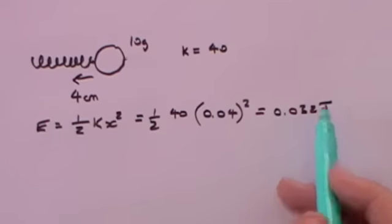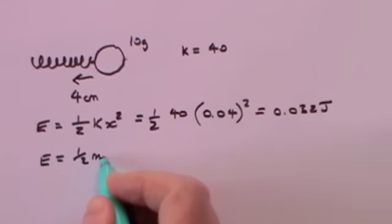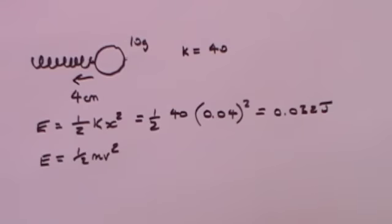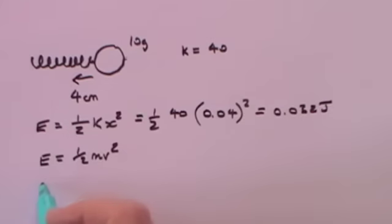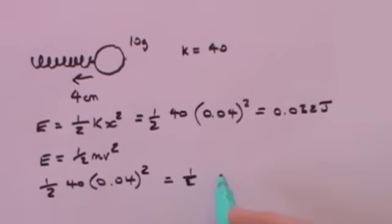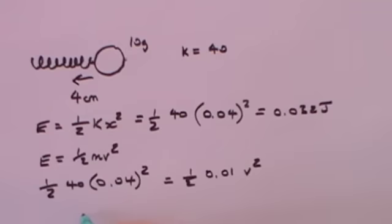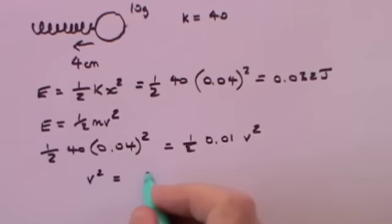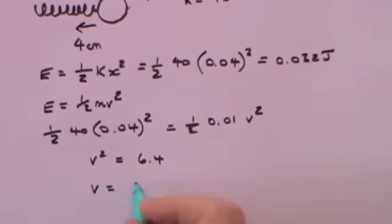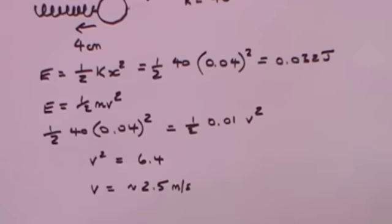That energy is given to the ball as kinetic energy: a half m v squared. Setting the spring energy equal to the ball's kinetic energy — a half times 40 times 0.04 squared equals a half times 0.01 kilograms times v squared — gives v squared equal to 6.4, meaning v is approximately 2.5 metres per second. That is the speed of the ball as a consequence of the spring hitting it.